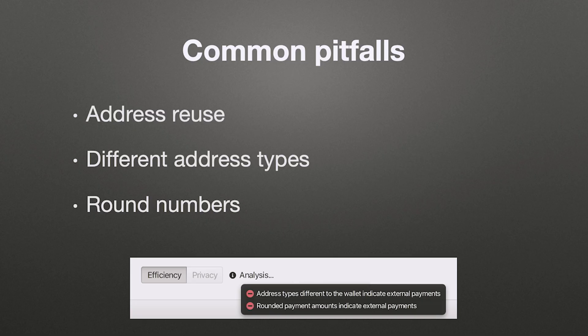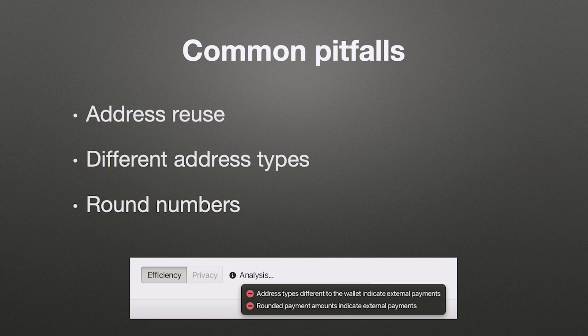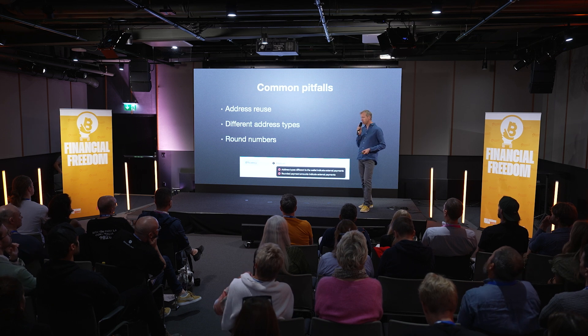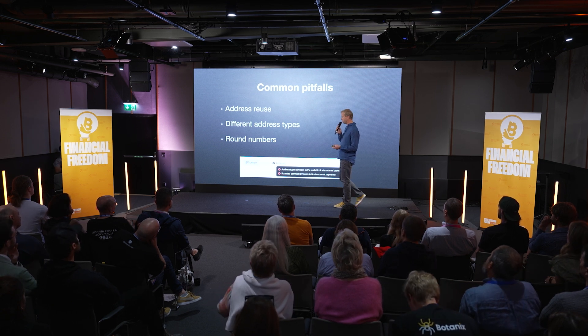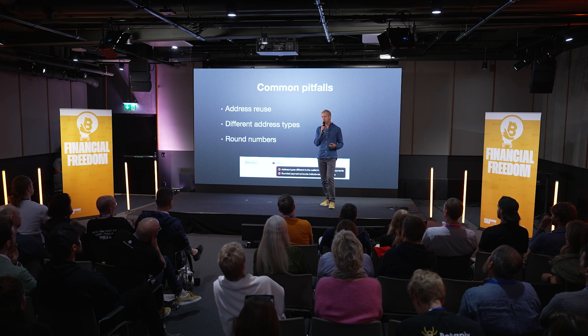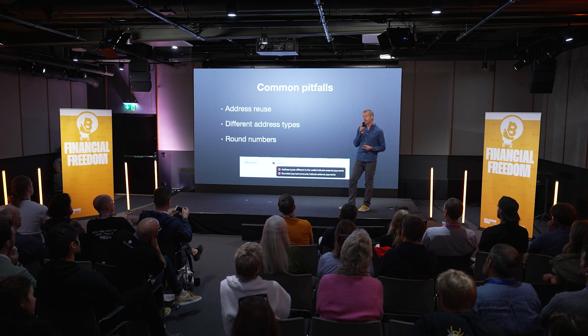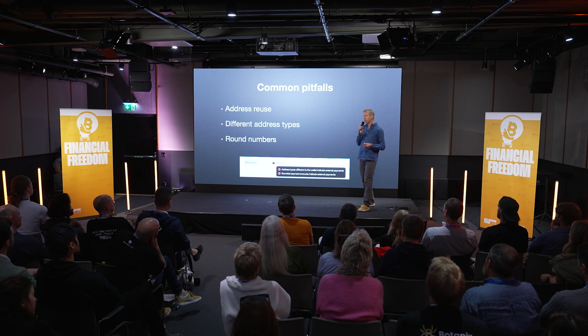Let's look at some of the common pitfalls. We've all heard about address reuse: if you send funds to the same address, there is a hundred percent certainty that they are controlled by the same entity, so that's something you always want to avoid. Due to Bitcoin's history, we have a variety of different address types, and these can help identify which is the change output if it stands out in the transaction. Finally, simply using round numbers when sending a payment amount can really identify which is the payment, because change is not typically a round number.